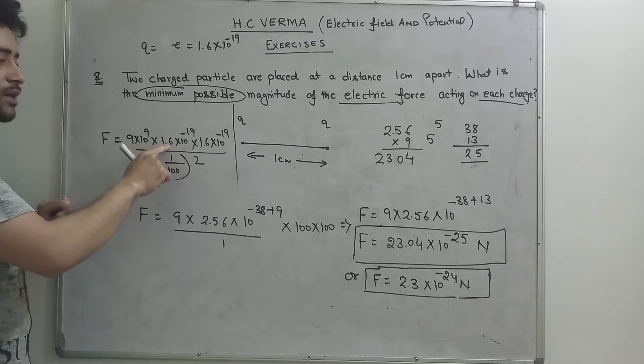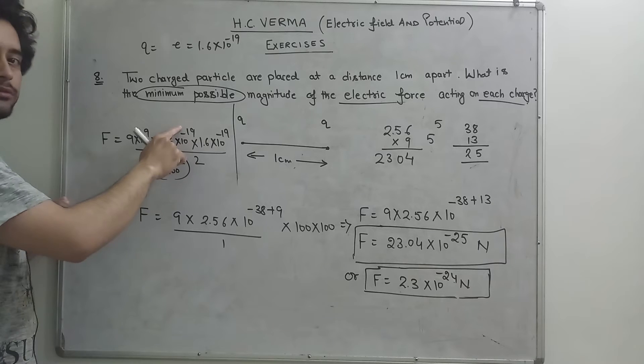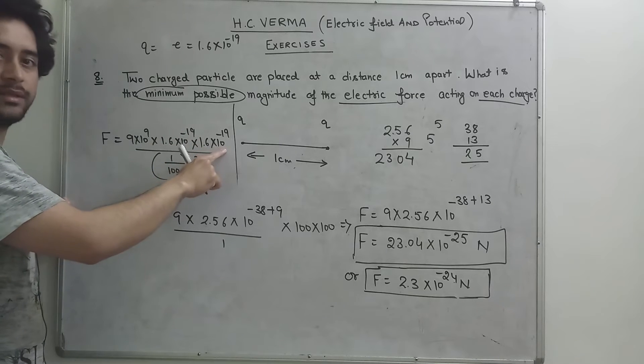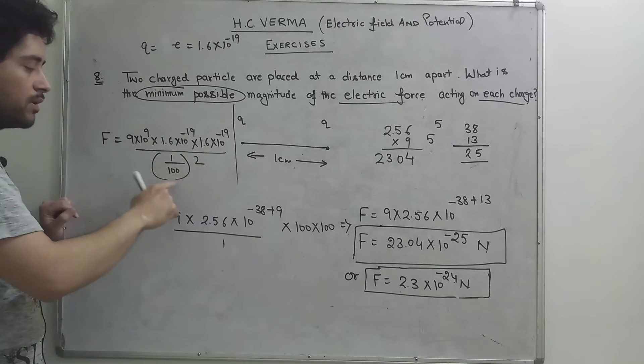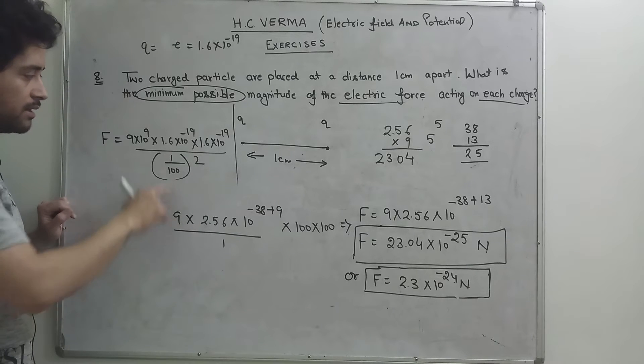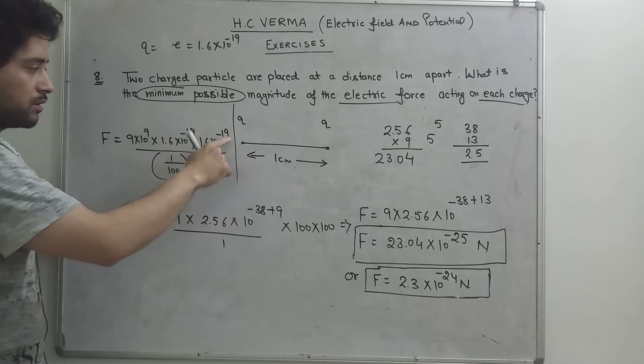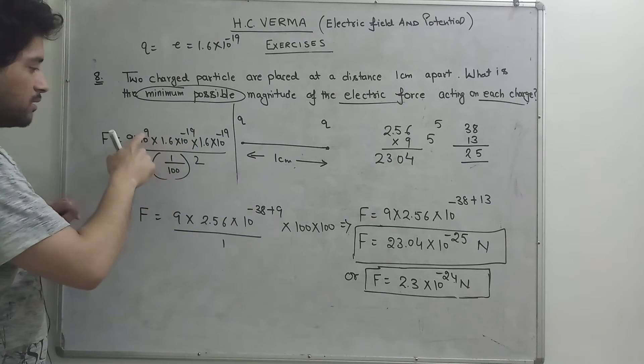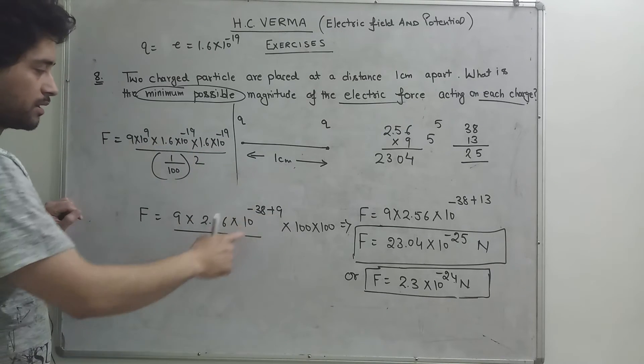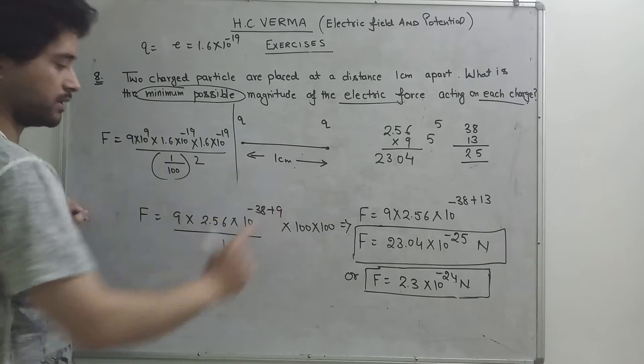Charge value 1.6 into 10 raised to minus 19, 1.6 into 10 raised to minus 19, and 1 over 100 square. So F is equal to 9 and 16 into 16, 2.56.